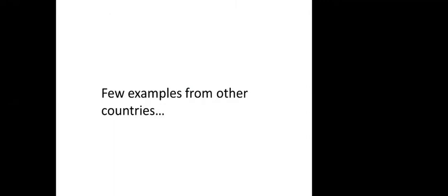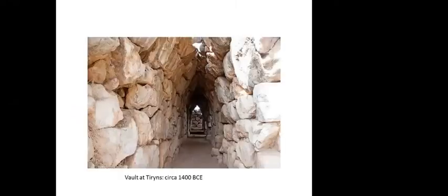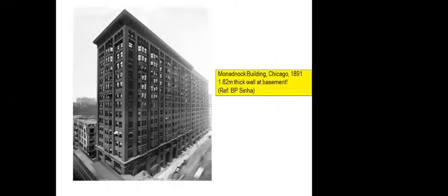Looking at examples from other countries: this is supposedly the oldest masonry construction and vault in Greece, supposedly 1400 years before the current era, though in my opinion there are fantastic buildings in India — at Harappa, Mohenjo-daro, Nalanda University — which are probably even older. This is very interesting: one of the first multi-storied buildings, much before RCC became popular. It is a 16-storied building — the Monadnock Building in Chicago — constructed way back in 1891. At that time, the knowledge of structural masonry was not fully developed, so the wall thickness at the base was 1.82 meters — as much as six feet.